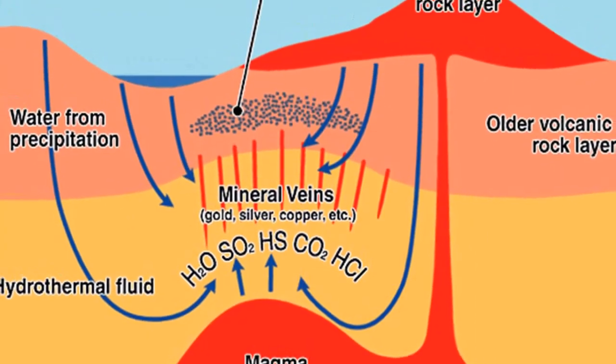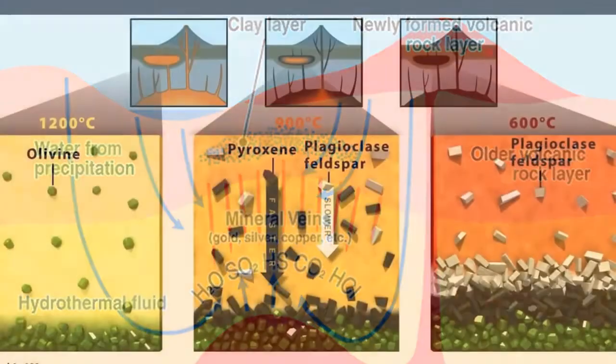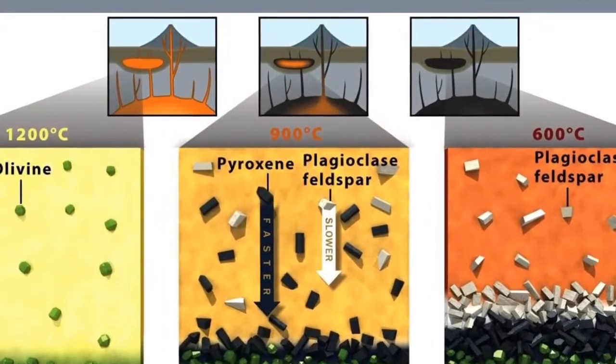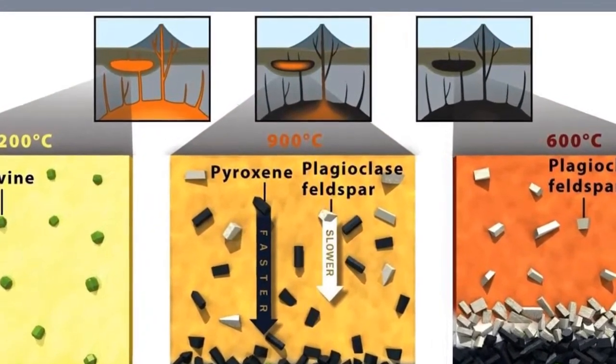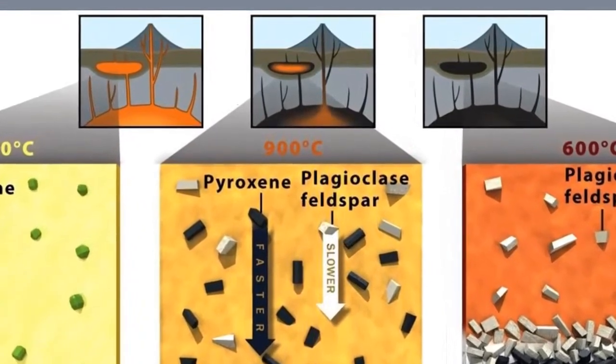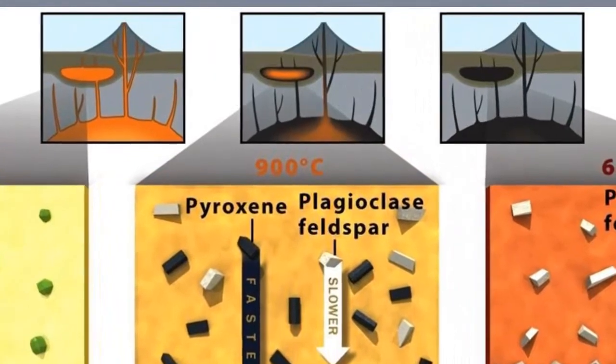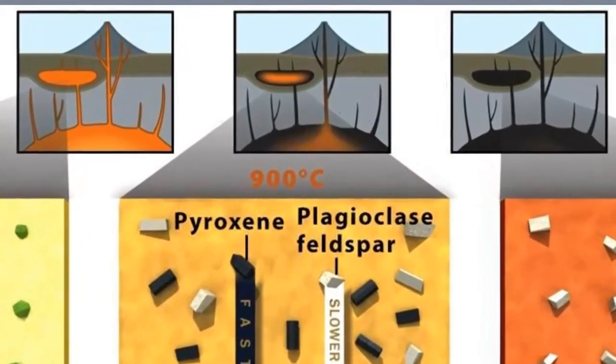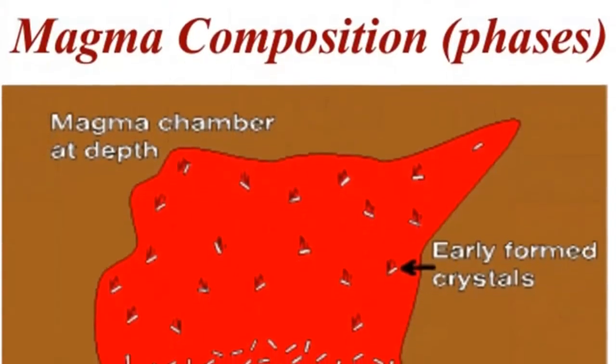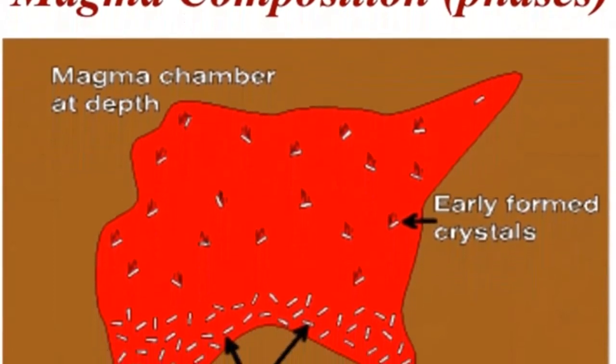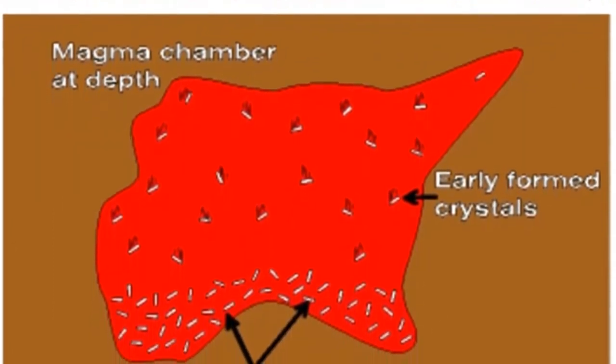The solid components, if any, in magma are silicate minerals that have crystallized from the melt. As a magma body cools, the size and number of crystals increases. During the last stage of cooling, a magma body is mostly a crystalline solid with only minor amounts of melt.